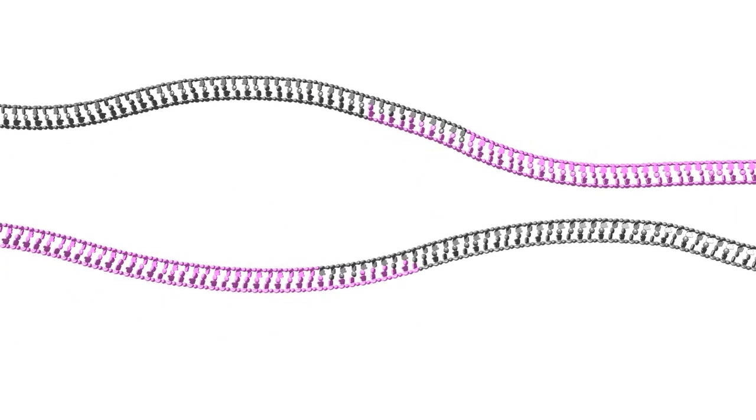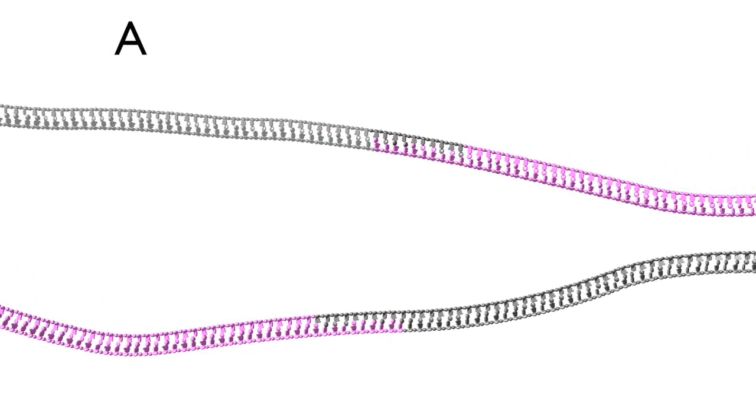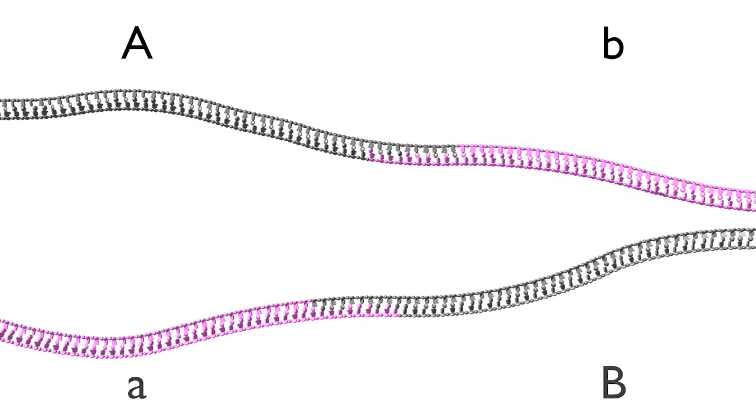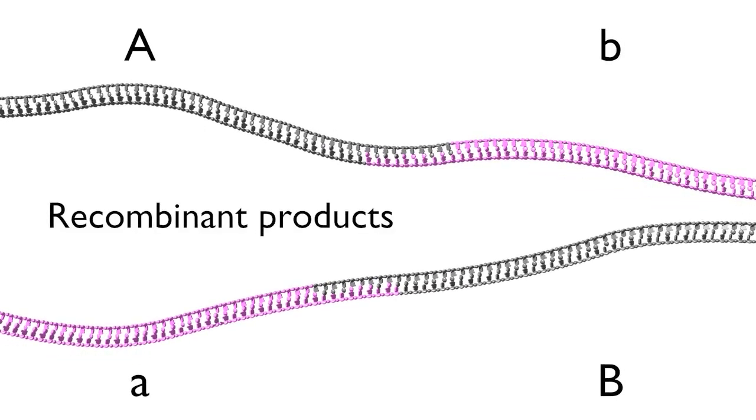By contrast, Holliday junction cleavages along the vertical axis result in product duplexes in which parental duplexes have been exchanged. In other words, flanking segments from each parent are covalently linked in the product duplexes. For example, big A in grey is now joined to little b in pink. The progeny duplexes are called recombinant products.